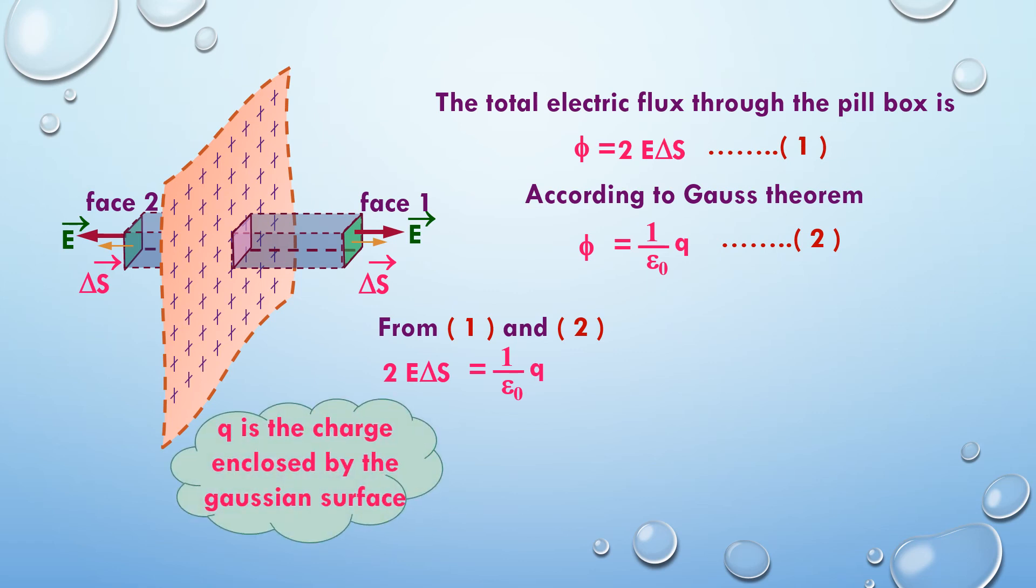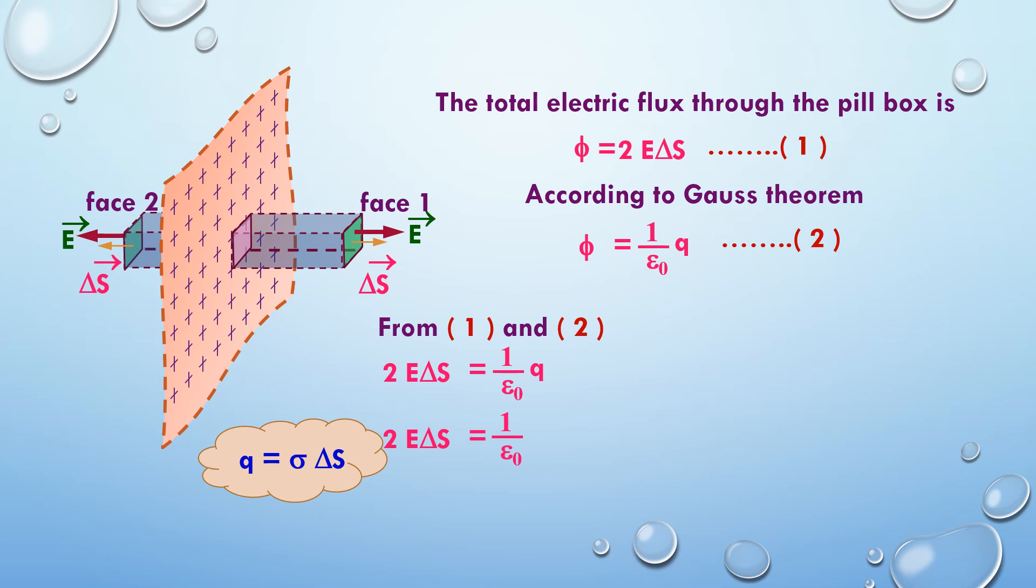So Q is the charge enclosed by the Gaussian surface. Therefore, 2E delta S is equal to 1 upon epsilon naught times sigma into delta S, where we have replaced Q by sigma into delta S, where sigma represents surface charge density. We can strike out delta S on both sides. So we are left with E is equal to sigma upon 2 epsilon naught.